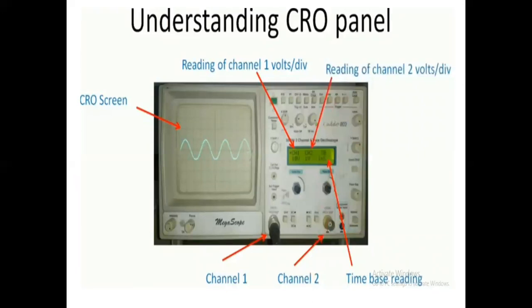Now, understanding the CRO panel. This is the CRO panel. The first element is the CRO screen, on which the output waveform of any signal will be shown. There are three readings: CH1, CH2, and TB — that is, two channels and a time base.